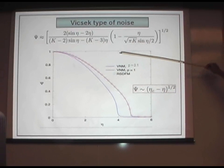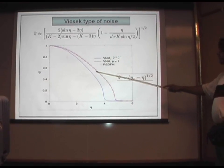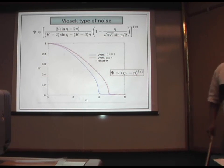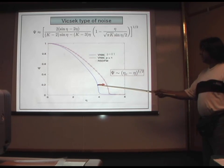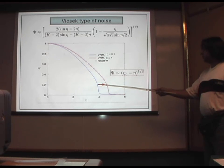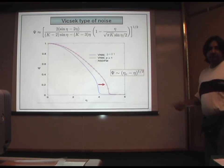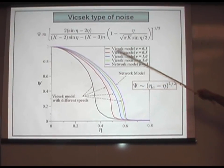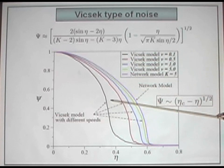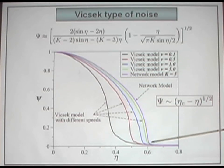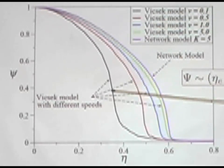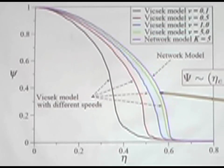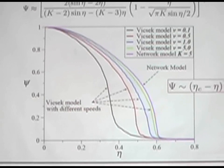These two curves are for two values of the rewiring probability, p equals 0.1 and p equals 1. You can see that as we increase the value of the rewiring probability, the phase transition curve approaches continuously to the mean field theory prediction. This is exactly what happens with the Vicsek model. These curves are for the Vicsek model, and the purple curve is for the network model accompanied by the mean field approach. If we increase the speed of the particles in the Vicsek model, we see the phase transition continuously approach the curve predicted by the network approach.